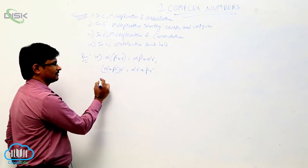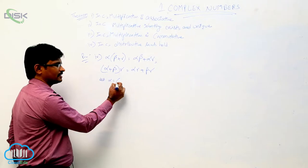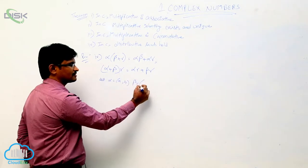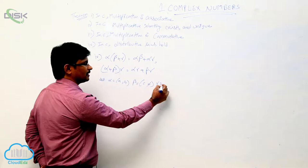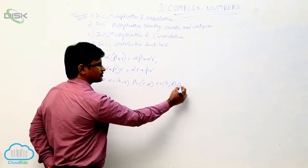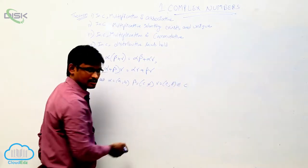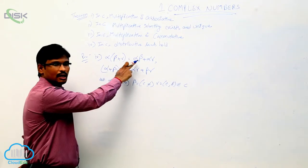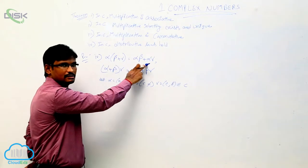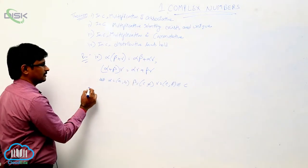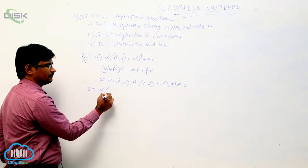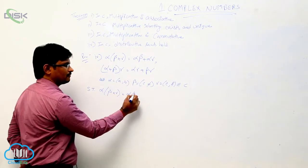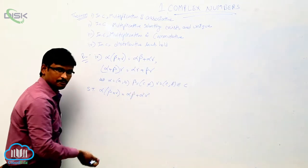Let the complex numbers alpha = (a, b), beta = (c, d), gamma = (e, f), all belonging to the complex numbers. Now we will prove that alpha·(beta + gamma) = alpha·beta + alpha·gamma. That is the first one we will prove.